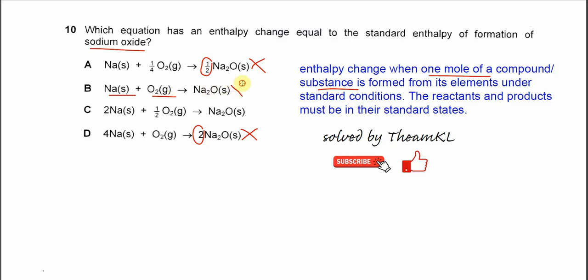this one cannot be considered. So C is the one that forms one mole, and this compound is formed from the elements sodium and oxygen, and it's balanced - two moles of sodium and half mole of oxygen. So therefore, the answer is C. That's all, thank you.